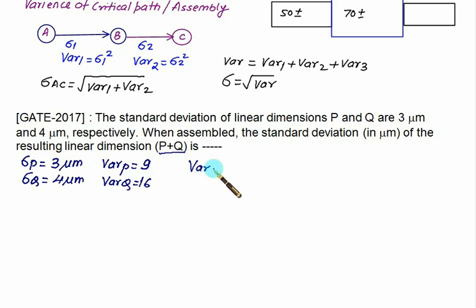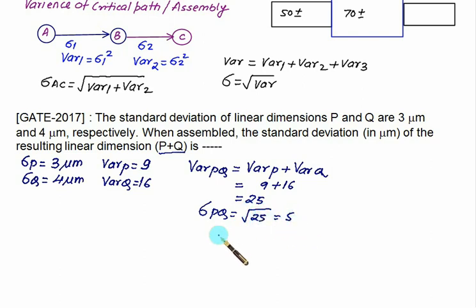Variance after assembly PQ will be variance of P plus variance of Q that equals 9 plus 16 which is 25. In that case if you want to calculate the standard deviation you just take the under root of PQ variance. Under root of 25, so the answer is equal to 5. This is a tricky question they can ask sometimes.